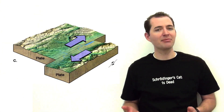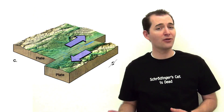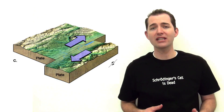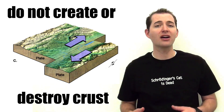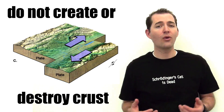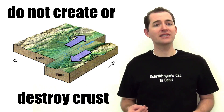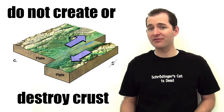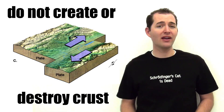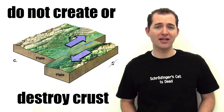Transform boundaries are where two plates slide past each other. Transform boundaries are different from convergent and divergent boundaries because they do not create or destroy crust. Because of this, transform boundaries lack the spectacular features which are commonly found at convergent and divergent boundaries.